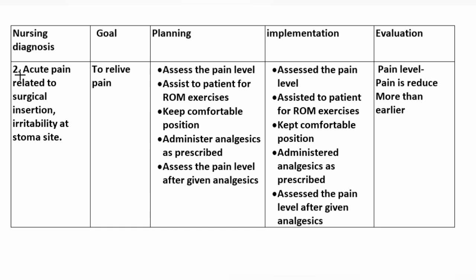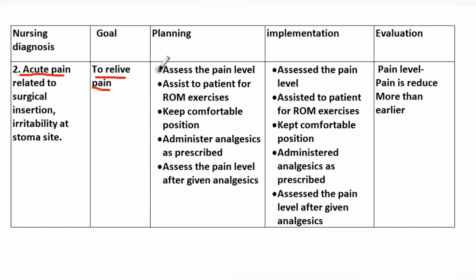Nursing diagnosis number two: acute pain related to surgical incision and irritability at the stoma site. Goal: to relieve pain. Planning: assess the pain level, assist the patient with form exercise, keep comfortable position, administer analgesics as prescribed, assess the pain level after giving analgesics.